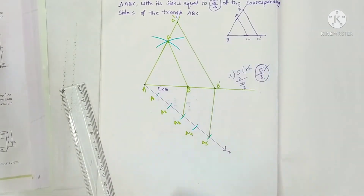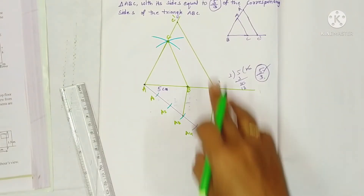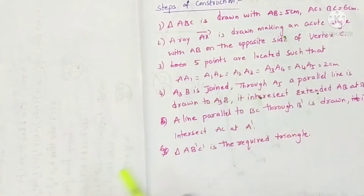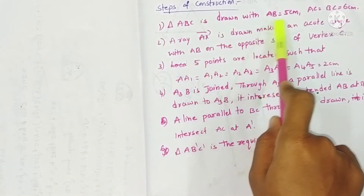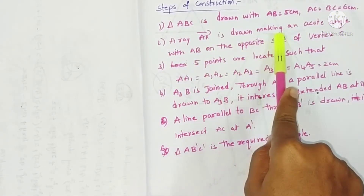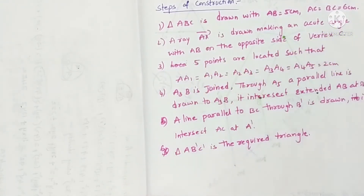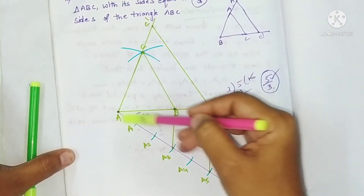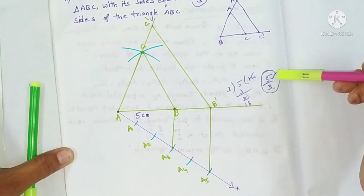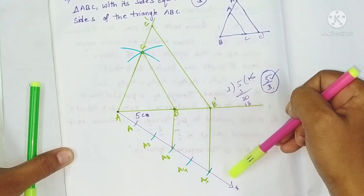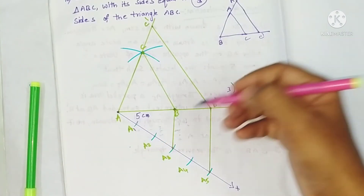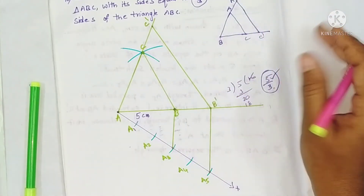Triangle AB dash C dash is the required triangle which is 5/3 of triangle ABC. To summarize the steps: first triangle ABC is drawn with AB = 5 cm and AC and BC = 6 cm each. Next, a ray AX is drawn making an acute angle with AB on the opposite side of vertex C. In the fraction 5/3, the big number is 5, so we locate 5 points A1, A2, A3, A4, A5.